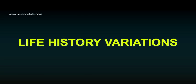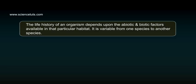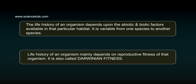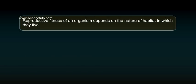Life History Variations. The life history of an organism depends upon the abiotic and biotic factors available in that particular habitat. It is variable from one species to another species. Life history of an organism mainly depends on the reproductive fitness of that organism, which is also called Darwinian fitness. Reproductive fitness of an organism depends on the nature of habitat in which they live.